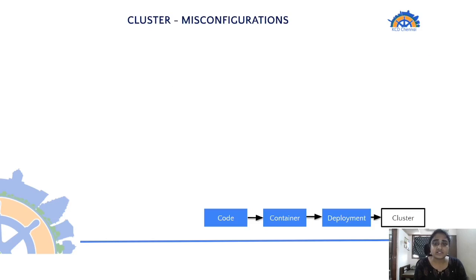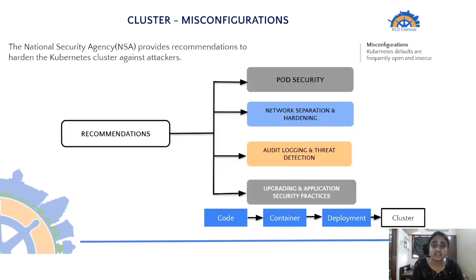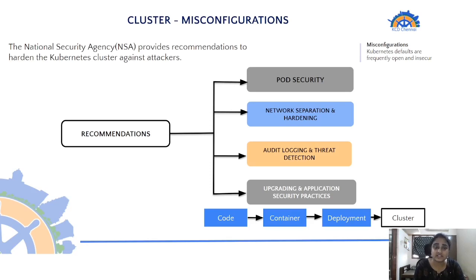To overcome misconfigurations, the NSA has provided recommendations to harden Kubernetes clusters, categorized into: pod security, network separation, upgrading, application security practices, and audit logging. For example, under network separation, you must secure access to control plane components through a firewall and enable role-based access control. Under audit logging, you must enable audit logging for full observability. Under upgrading, you follow best code practices, check for unused packages, and do frequent vulnerability testing and security scanning.